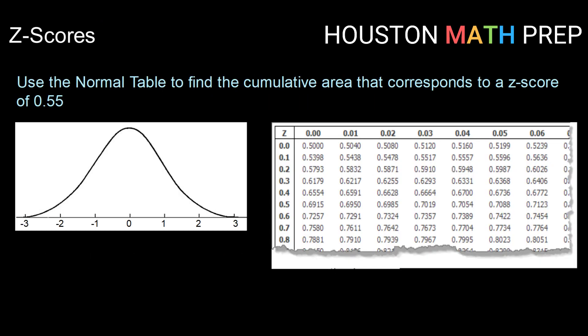So here's what a normal table looks like, or a portion of one, so I've just taken a small portion here. Use the normal table to find the cumulative area that corresponds to a z-score of 0.55.